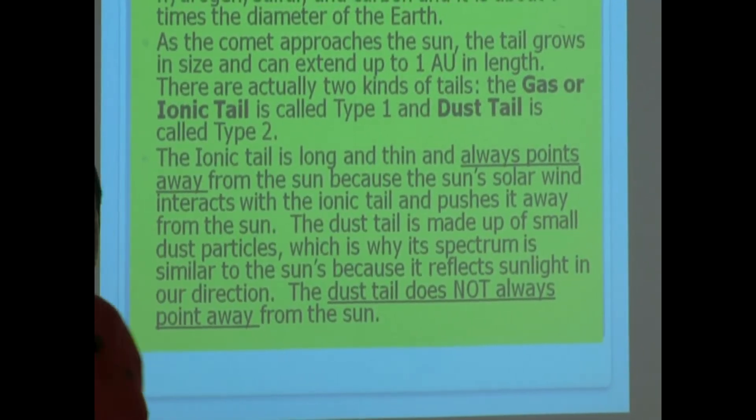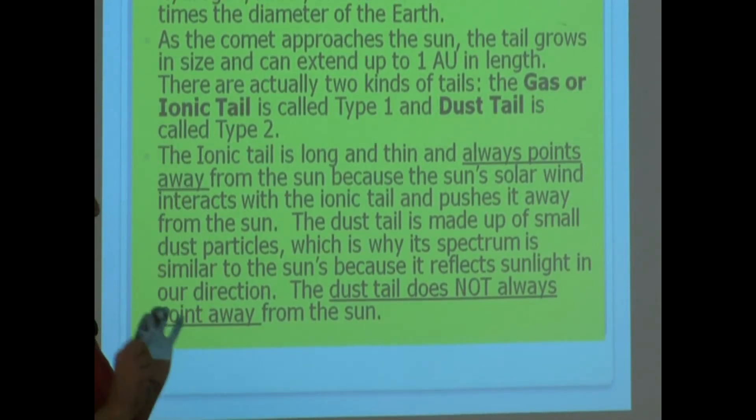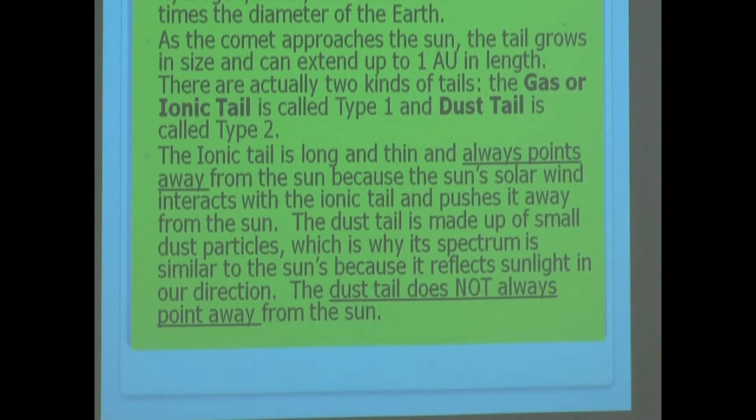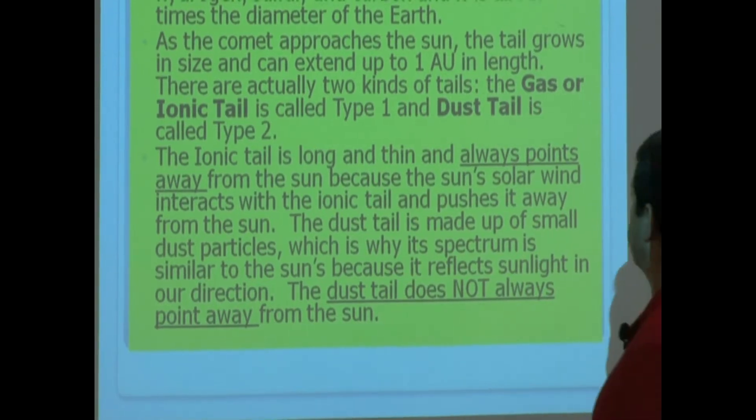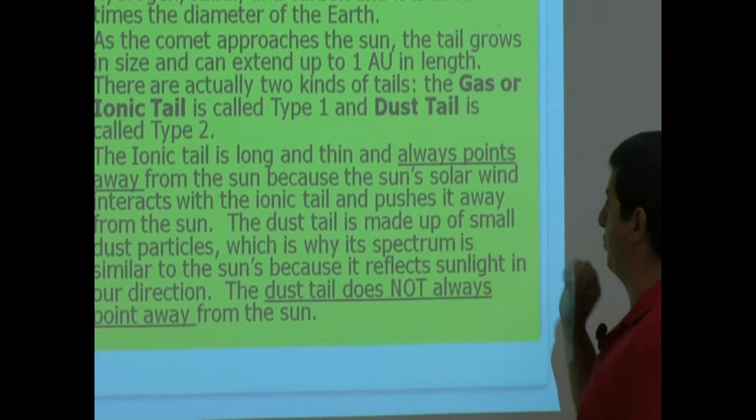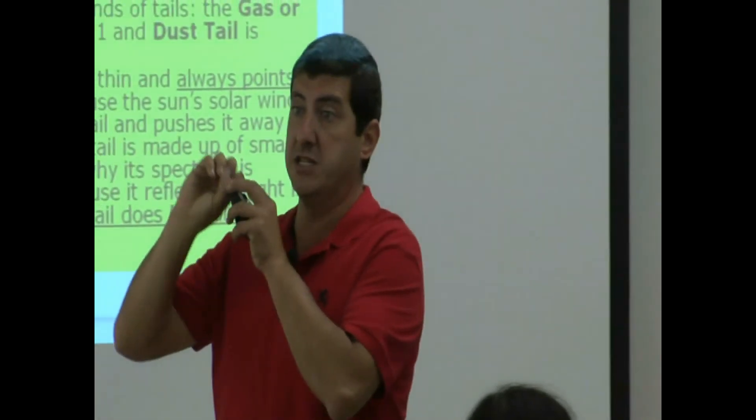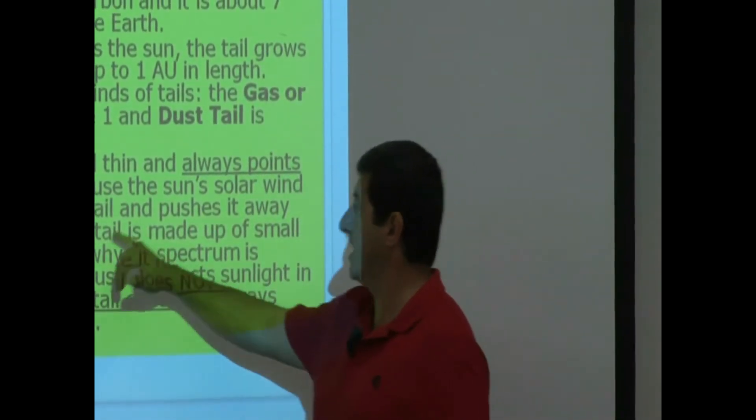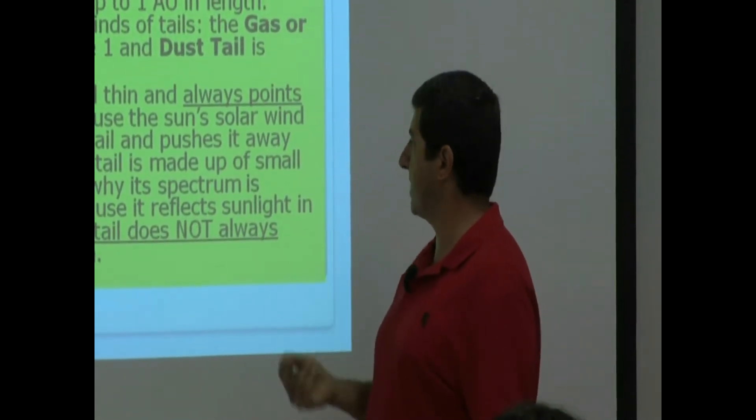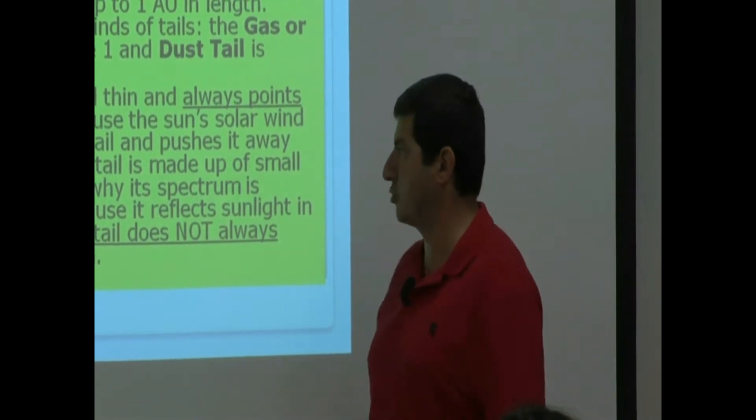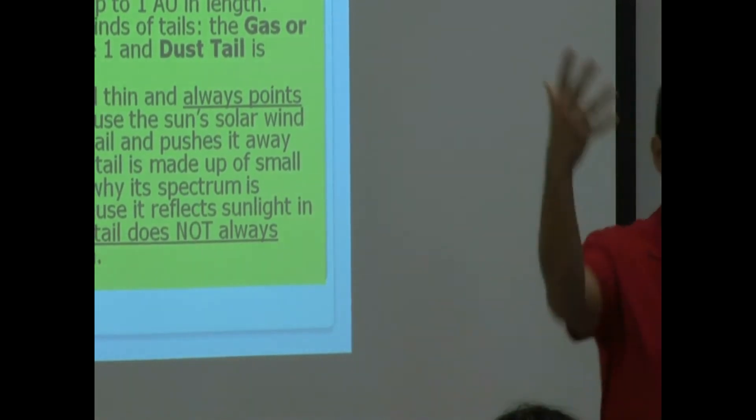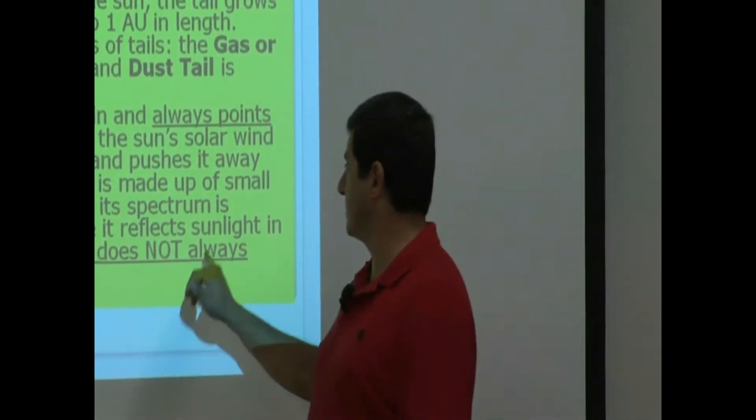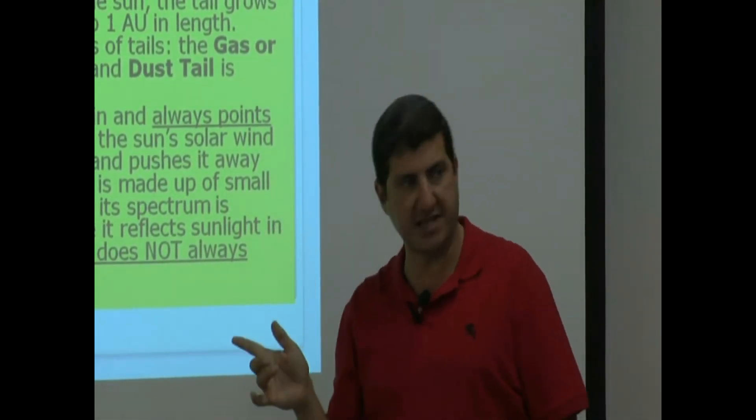There are actually two kinds of tails: the gas or ionic tail, that's just the same, different words for the same term, and this is called a type 1 tail. Dust tail is called type 2. The ionic tail is very, very long and thin, and always points away from the sun because the sun's solar wind interacts with the ionic tail and pushes it away from the sun. The dust tail does not always point away from the sun. It's the gas tail that points away, not the dust tail.